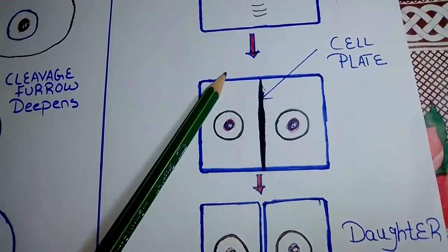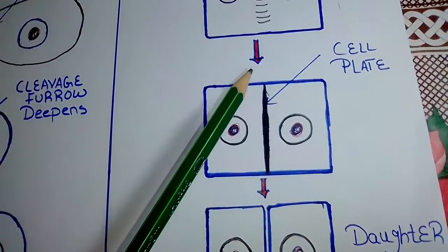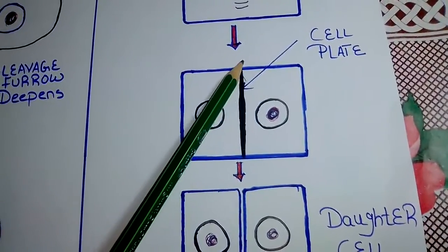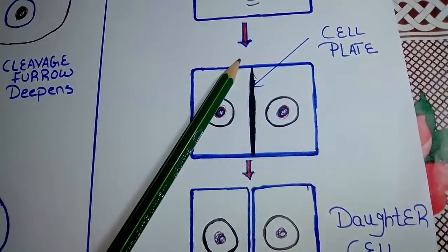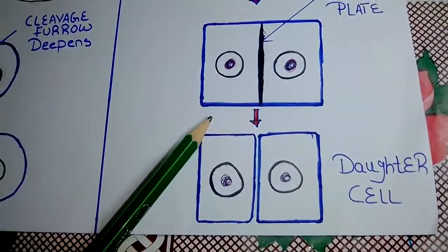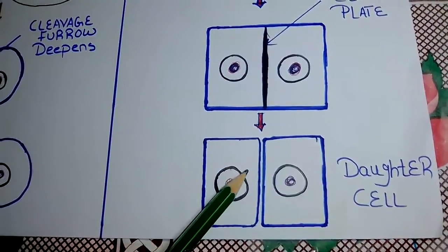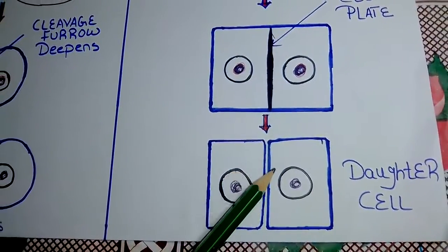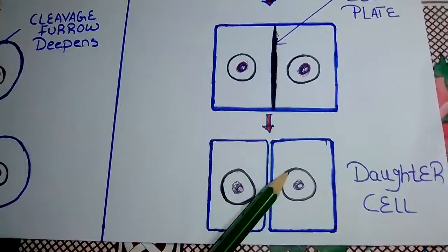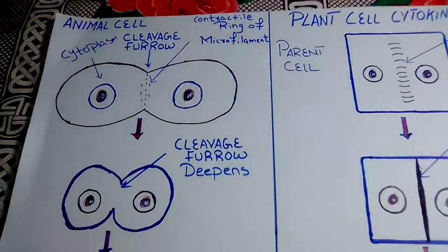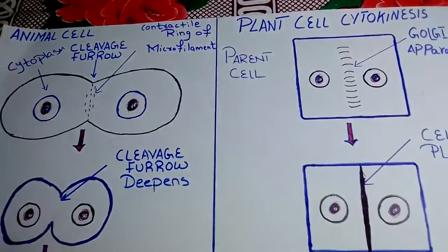The membrane of the cell plate fuses with the plasma membrane, and its contents join the parental cell wall. The result is two daughter cells, each bounded by its own plasma membrane and cell wall. So that was the main difference between animal cell cytokinesis and plant cell cytokinesis.